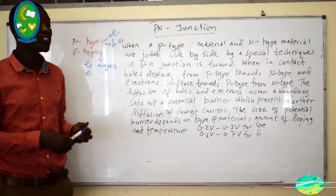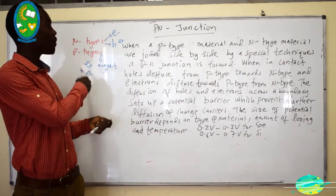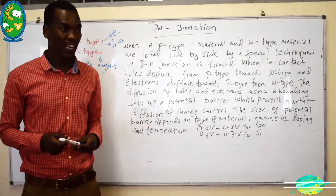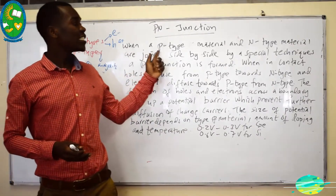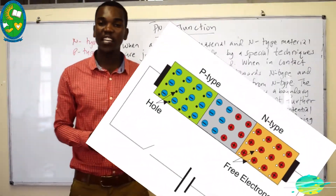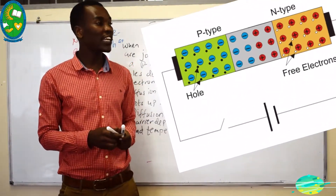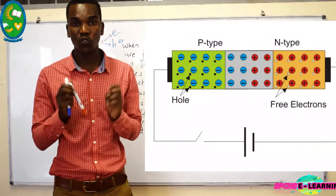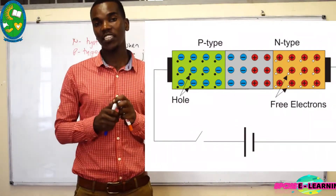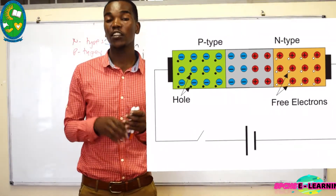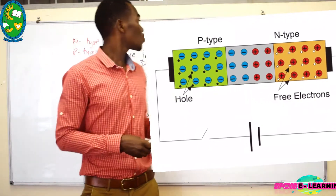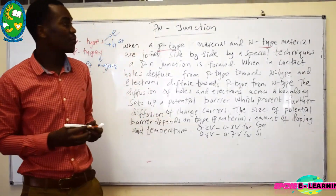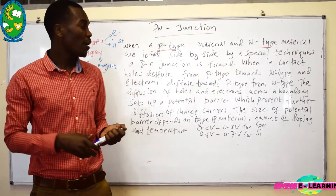So they have an imbalance of charge when they are in isolation — P-type has an excess of holes, whereas N-type has an excess of electrons. But when P-type and N-type materials are joined side by side by a special technique, we form what is known as a P-N junction. This P-N junction is the fundamental part in electronics.